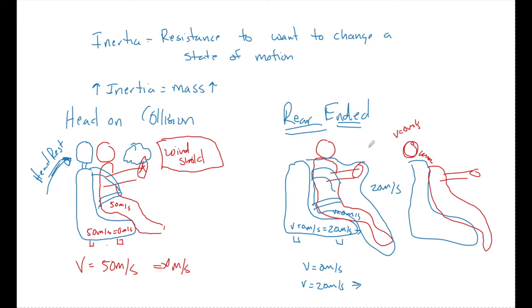So what we do is we put a headrest right here so that when the chair pushes your body forward, the headrest comes and it moves your head forward at 20 meters per second, putting less damage on your neck.